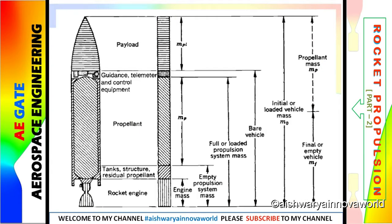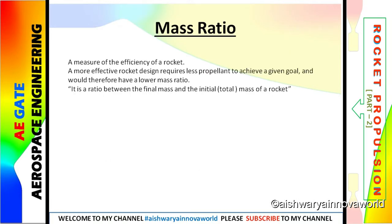This is the intro — what things are available in the rocket: propellant, rocket engine, mass, empty mass, vehicle, etc. Now I will come to the very basic nomenclature of mass ratio, which is a measure of efficiency of a rocket. A more effective rocket design requires less propellant to achieve a goal.